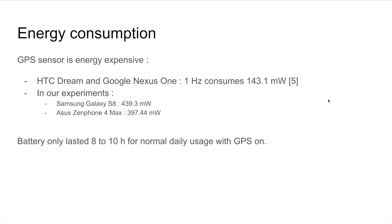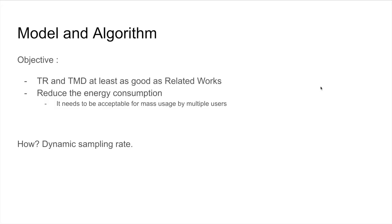Model and algorithm: The approach that we'll be presenting today—we wanted to tackle the trip reconstruction and transport mode detection problem with an accuracy at least as good as the related work. We also wanted to reduce the energy consumption because it needs to be acceptable for mass usage by multiple users. How are we going to do that? It's simple: we're going to propose an approach that uses a dynamic sampling rate.